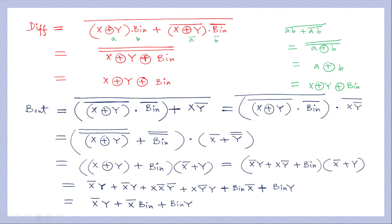For the borrow output BOUT, this is a NOR operation between the relevant gate outputs, including point C (XY̅). Simplifying step by step using De Morgan's law and Boolean algebra yields the standard borrow expression for a full subtractor.